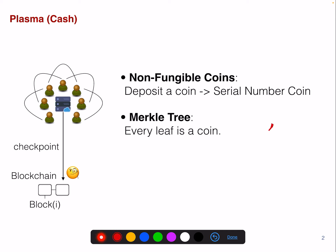So if this is the root of the Merkle tree, you have a binary Merkle tree where this is coin number one, this is coin number two, coin number three, and this is coin number four. These particular coins are associated to a particular owner — it's kind of like a serial number coin.